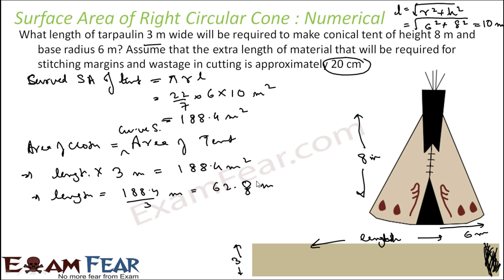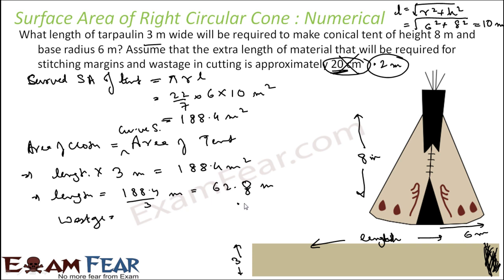Adding the wastage: 20 centimeters converts to 0.2 meters. So total length = 62.8 + 0.2 = 63 meters. Therefore, 63 meters of cloth will be required to make this tent.